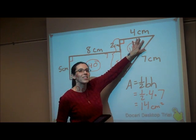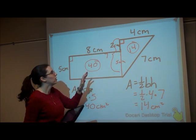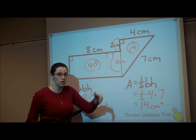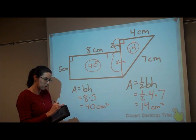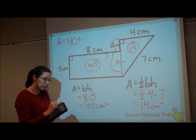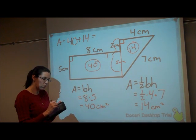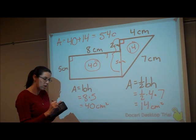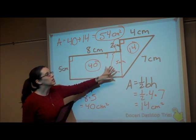But again, I want to find the entire area. So I have to add the 40 plus the 14. So the area would be 40 plus 14, which would give you 54 square centimeters for the area of the entire shape.